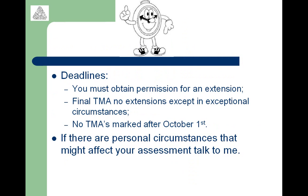In relation to the final TMA, note that there are no extensions except in exceptional circumstances, and there are no TMAs marked after the 1st of October. This would apply to someone where, in exceptional circumstances, a TMA has been missed and the regional office has been consulted and may approve the marking of a very late TMA — but that must be before the 1st of October. All problems with TMAs must be resolved before October 1st.